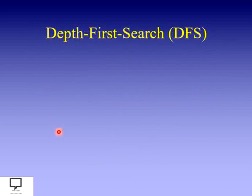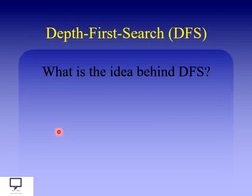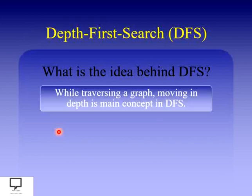Let's see what depth first search technique is — what is the idea behind DFS. While traversing a graph, moving in depth is the main concept in DFS. If you know the tree data structure, there are three ways to traverse a tree while moving into the depth. With respect to graph, we don't have that many ways — only a single way exists to traverse a graph data structure, which is called DFS.